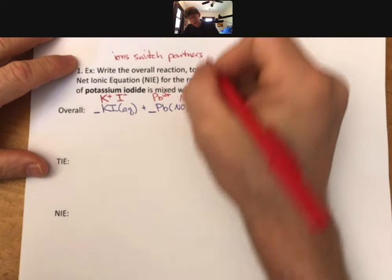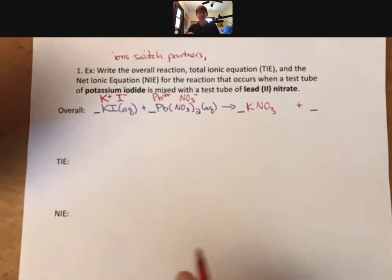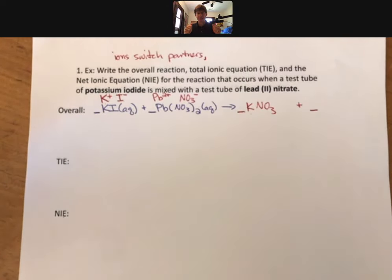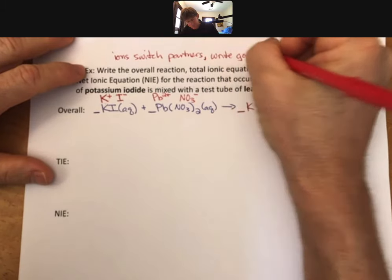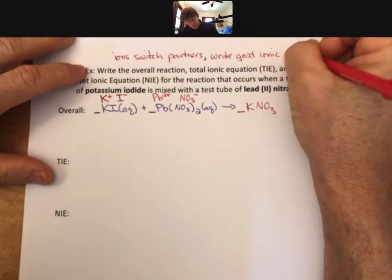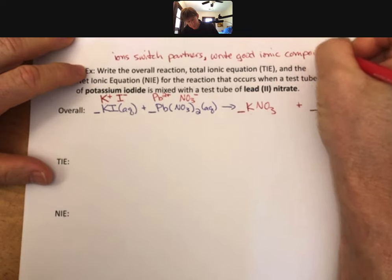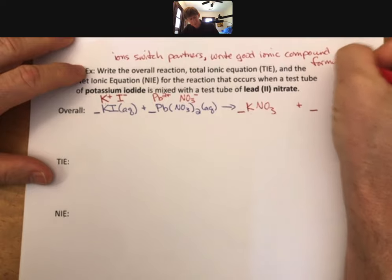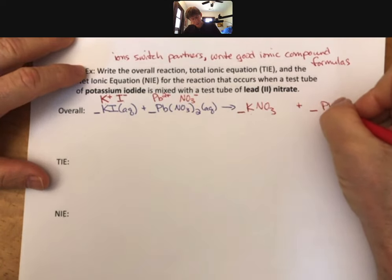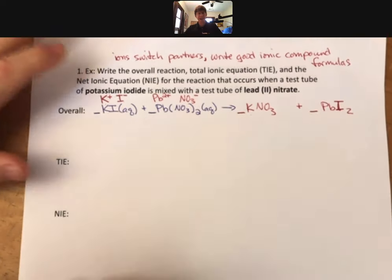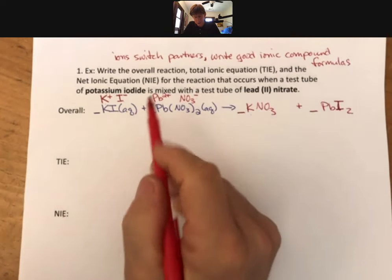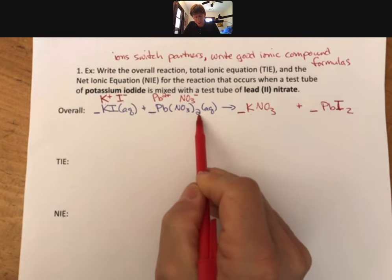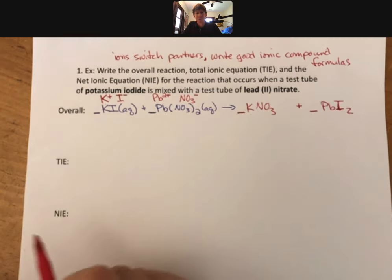Ions switch partners, write good ionic compound formulas. And what I mean by that is this is going to be PbI2, not just PbI, because the Pb is 2+ and we know that because it takes two nitrates to cancel one Pb.